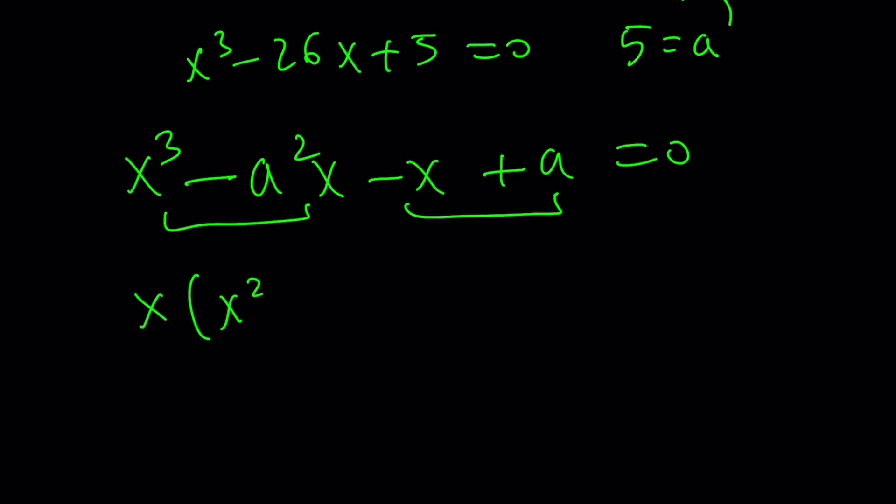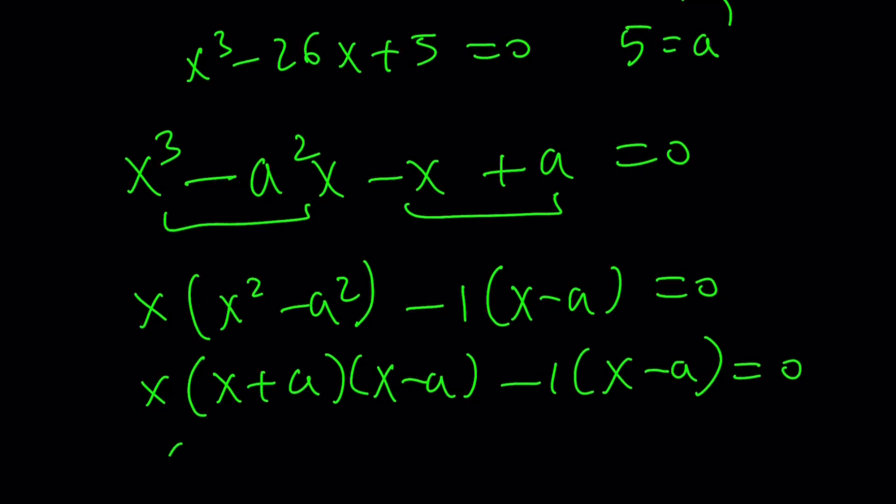So take out an x. You get x(x squared minus a squared minus 1). You're going to get (x minus a). x squared minus a squared can be factored using difference of two squares. You know the drill, hopefully. And then from here, you're going to get a common factor, which is x minus a. Which shouldn't be a surprise because we got the same result with the first method.